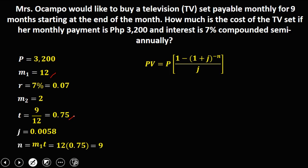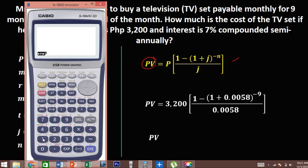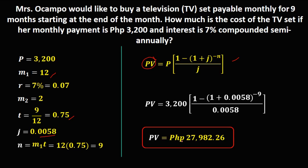Substituting all the values into the formula to solve for the present value: P is 3,200 times 1 minus (1 plus 0.0058) to the power negative 9, divided by 0.0058. So we have 1 minus 1.0058 to the power negative 9, divided by 0.0058, times 3,200. This gives us the present value. This is how to solve the present value of a general annuity.